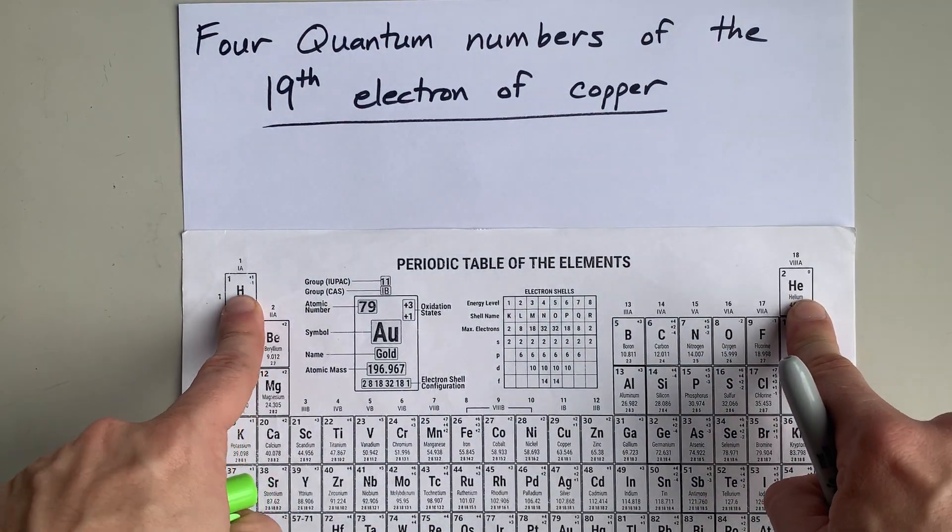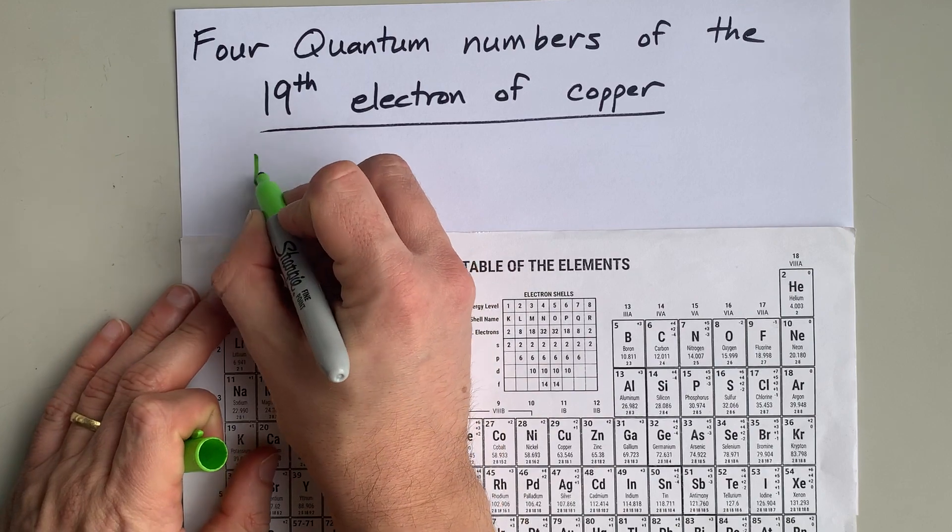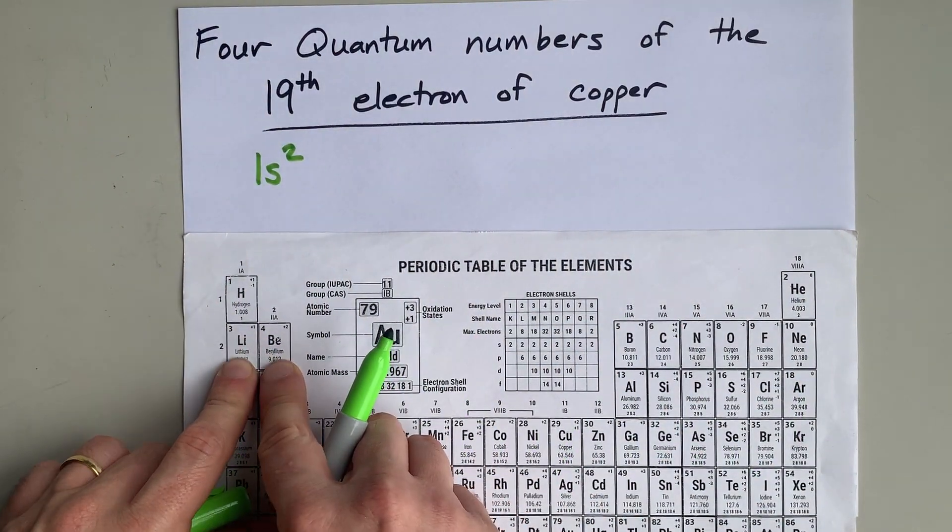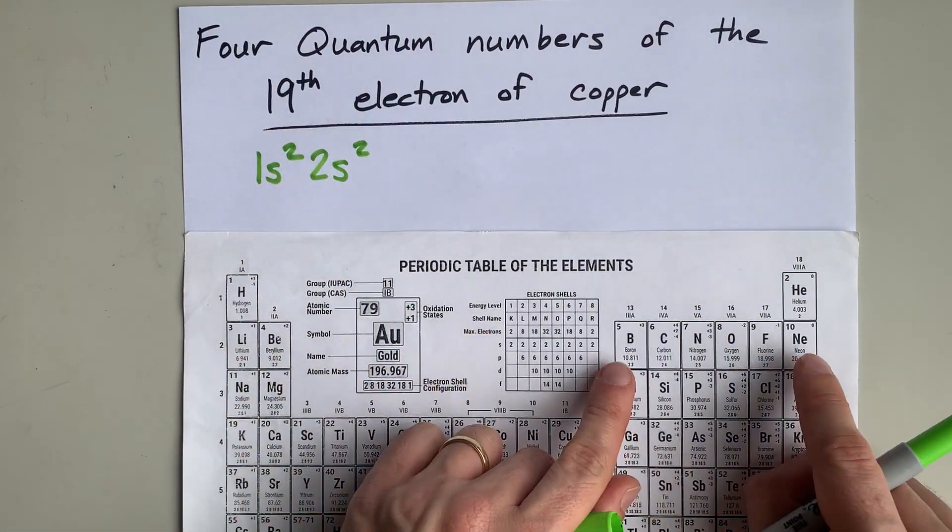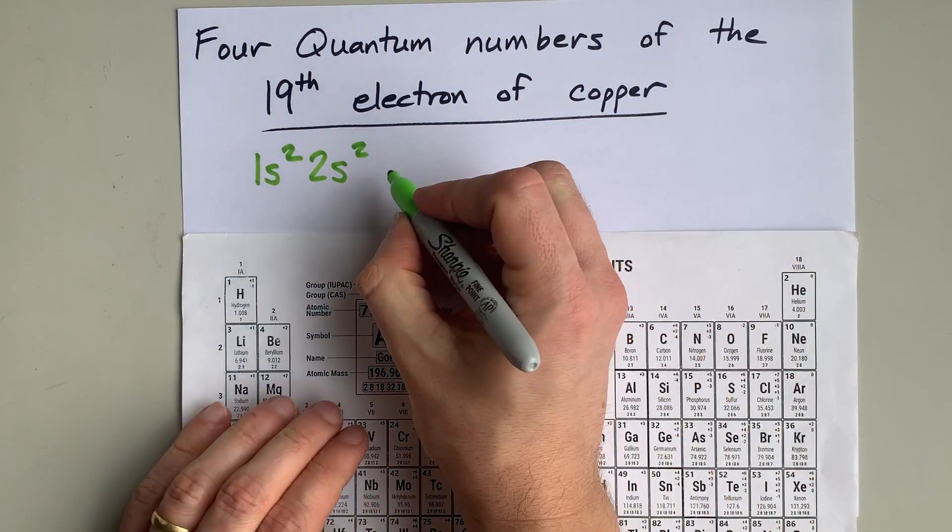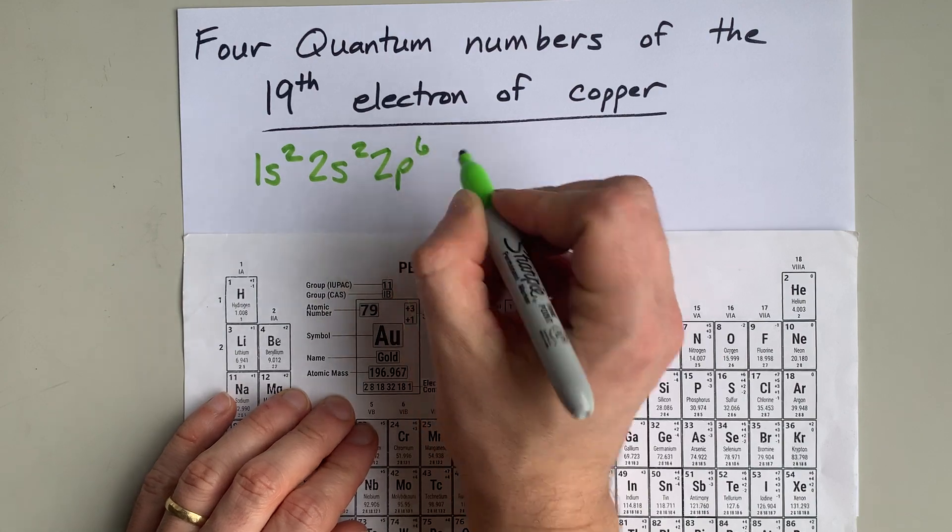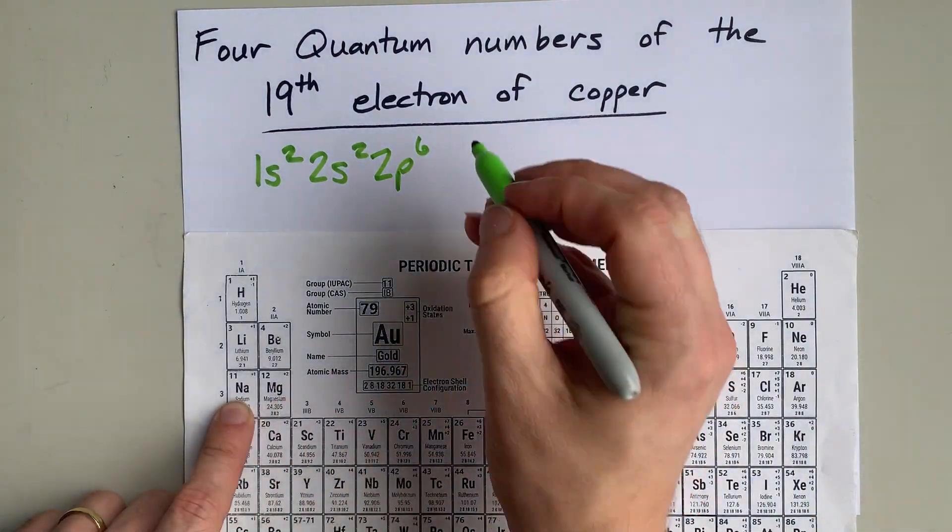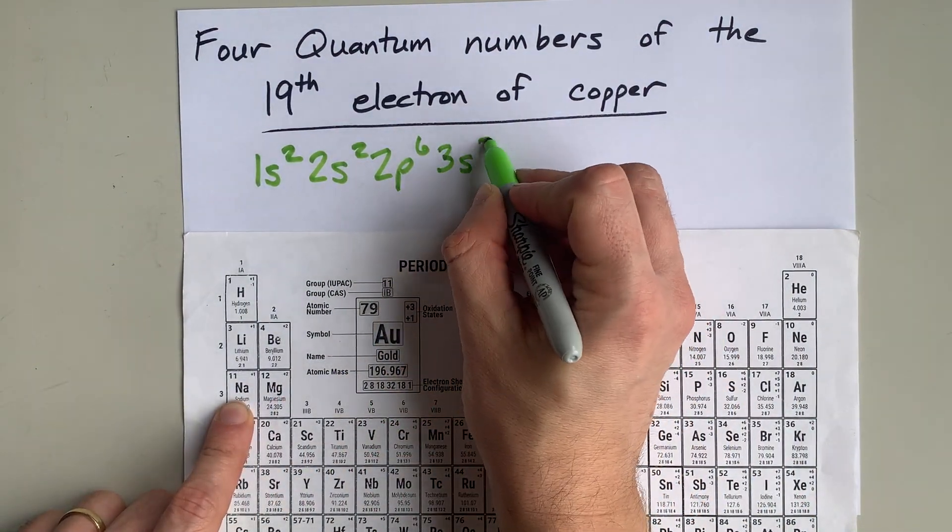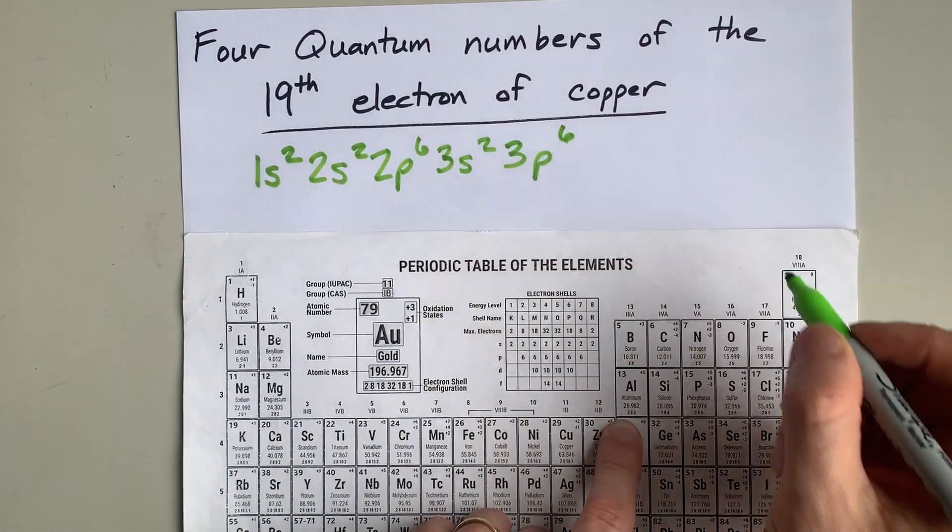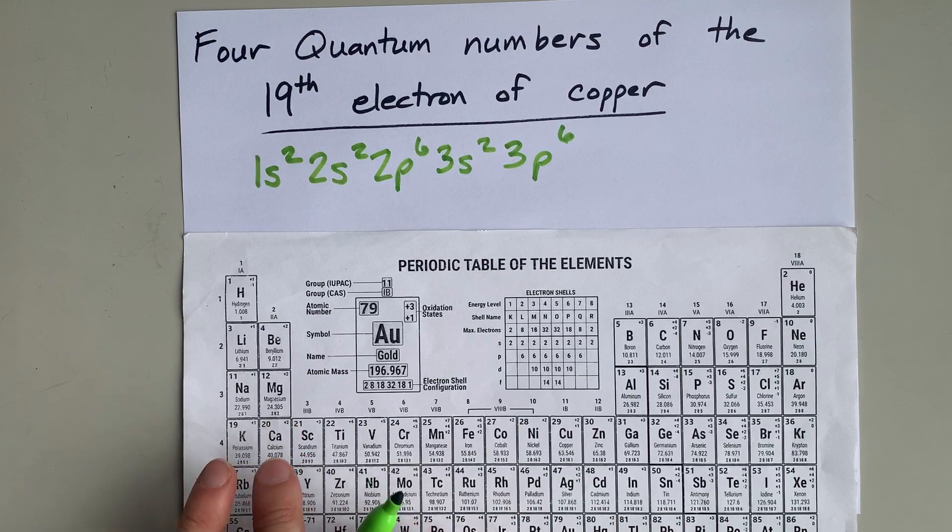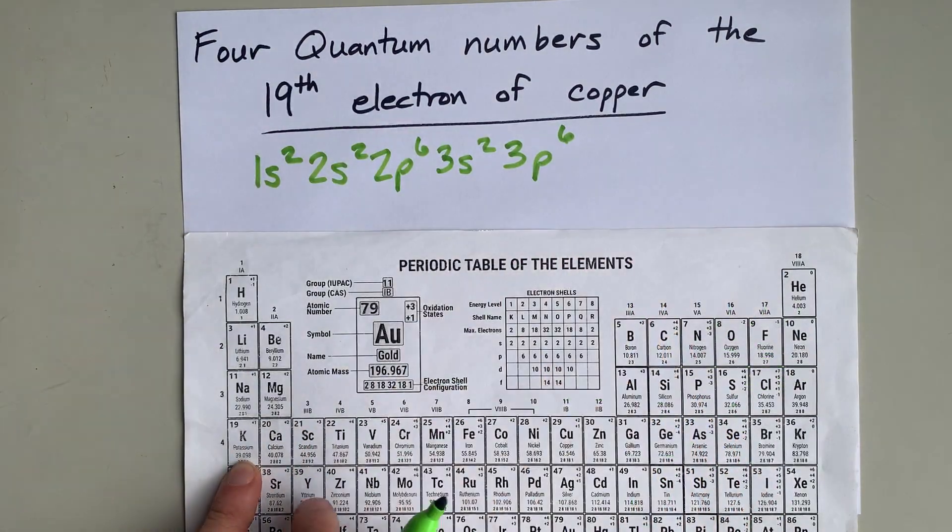These first two electrons represent 1s2. The next two electrons represent 2s2. Over here, the next six are 2p6. These are 3s2, then 3p6. And here's where it gets different. I'm going to do this incorrectly to start.